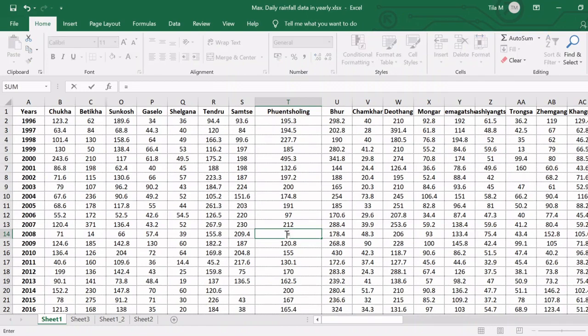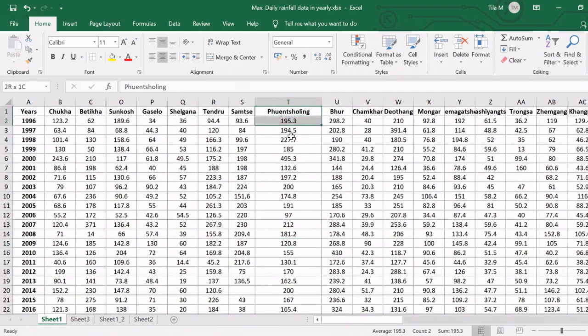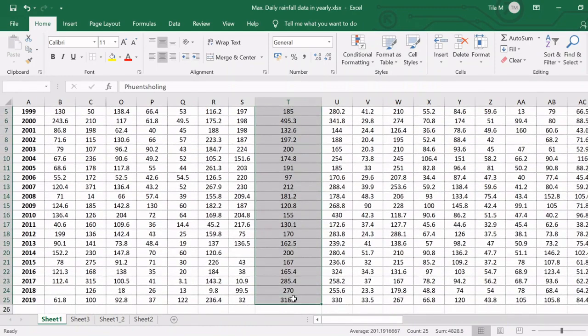What I'm going to do is, I'm going to take the value of Tendu and Samtse and Phuentsholing. Although these stations are not really located near to Phuntsholing, they are located in similar meteorological conditions. I'm just making an approximation here. With this, my dataset is complete now. I'm going to copy this to a new sheet. I have to paste it as values as I have done some calculations here.